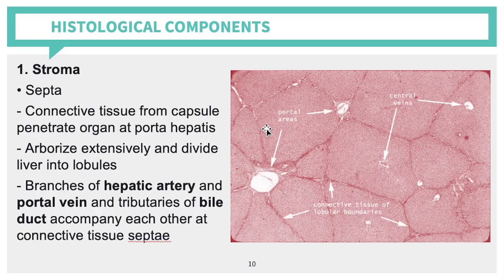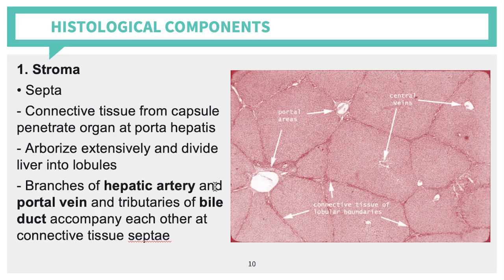Your septa divides the liver into lobules — you can see different lobules separated by this connective tissue boundary. Branches of your hepatic artery, portal vein, and tributaries of bile duct accompany each other at the connective tissue septa. Within the septa, you can also identify the different portal triads, which consist of your portal vein, hepatic artery, and bile duct.